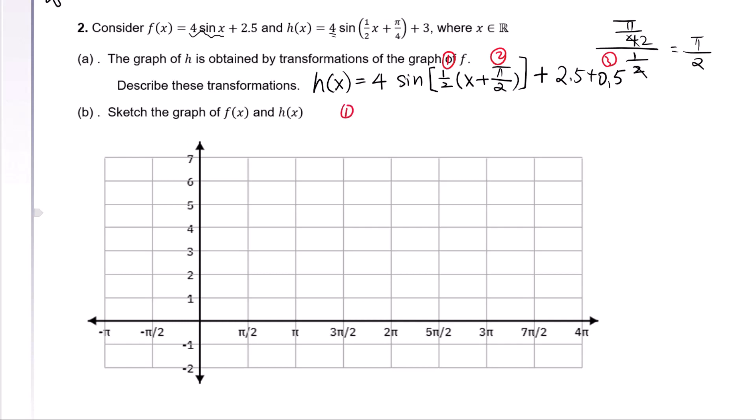First step: Dealing with x, we will use the word horizontal. A horizontal stretch with a scale factor of 2. Remember, inside is a liar. Second step: Plus π/2 means a translation to the left π/2 units. Third step: A translation up 0.5 unit.